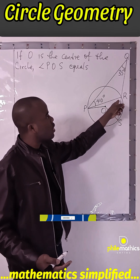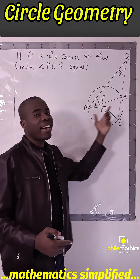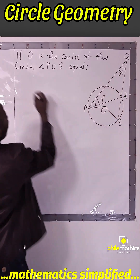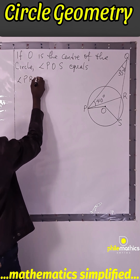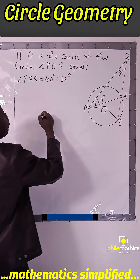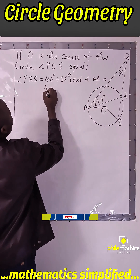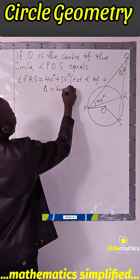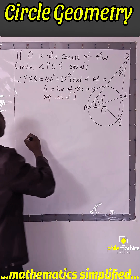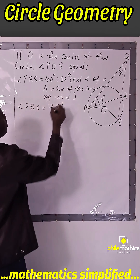To make it faster, I can get what this is from the sum of these two angles. Because the exterior angle of a triangle is the sum of the two opposite interior angles. So angle PRX gives me 40 degrees plus 35 degrees, which equals 75 degrees.